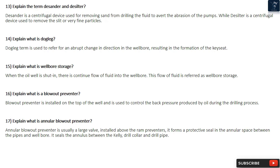Question 17: Explain what is an Annular Blowout Preventer. An Annular Blowout Preventer is usually a large valve installed above the ram preventers; it forms a protective seal in the annular space between the pipes and well bore. It seals the annulus between the kelly, drill collar, and drill pipe.